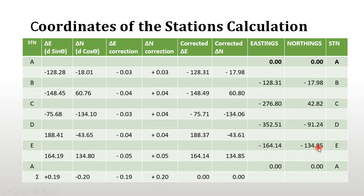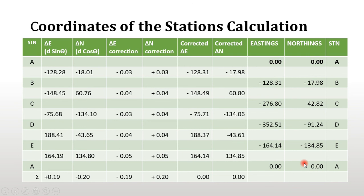For station D, the corrected change in northings for CD is minus 134.06. So 42.82 minus 134.06 gives minus 91.24. For station E, the corrected change in northings for DE is minus 43.61. So minus 91.24 minus 43.61 gives minus 134.85. Then the northings for A, adding the corrected change in northings for EA, gives minus 134.85 plus 134.85 equals zero — we have returned to our starting station, which confirms the arithmetic is correct.